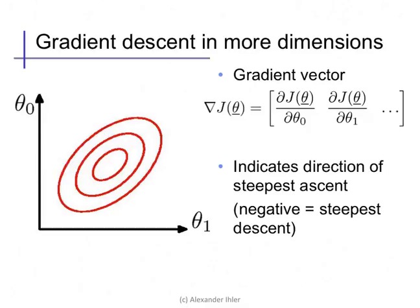In higher dimensions, the analog of the derivative is the gradient. The gradient measures the vector direction of steepest ascent for the function. It's a vector whose entries are the partial derivatives of j with respect to each dimension, so each parameter theta i. So to decrease j, we can take steps in the negative gradient direction. This is gradient descent.